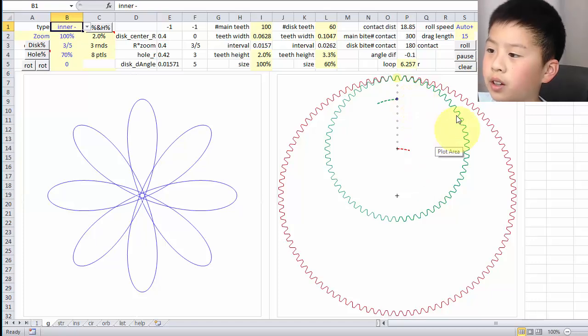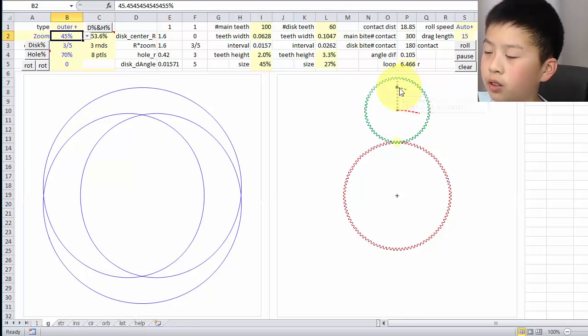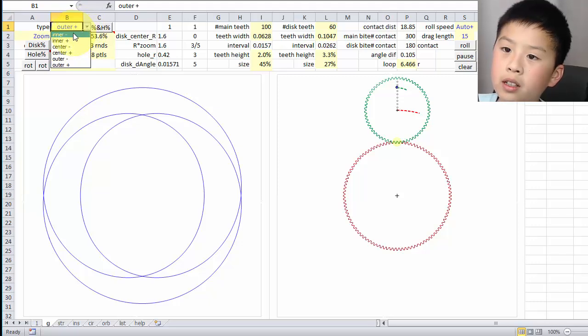You may have noticed that when the green disk is inside the red disk, it rotates counterclockwise, shown in the green line, but it orbits clockwise, shown in the red line. But if I changed it into outer mode, you can see that the green disk rotates clockwise, while the center of the green disk orbits clockwise too, as shown in the red. So that is why there is a minus behind inner, as they go opposite directions, and a plus behind outer, as they go the same direction.